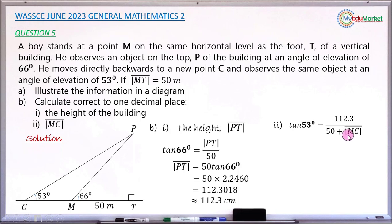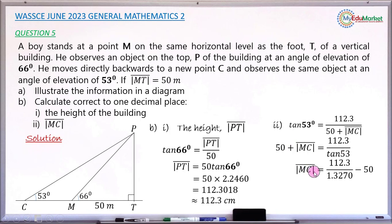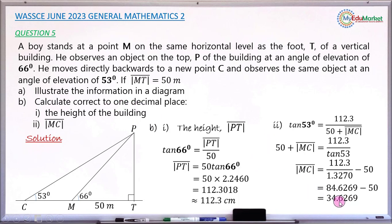Cross-multiplying and making MC the subject: 50 + MC = 112.3 divided by tan(53°). Taking 50 to the right-hand side: MC = 112.3 / tan(53°) − 50. Checking tan(53°) gives 1.3270. Dividing 112.3 by 1.3270 gives 84.6269. Subtracting 50 gives 34.6269. Rounded to one decimal place, the distance MC is 34.6 meters. This answers all two sub-questions.